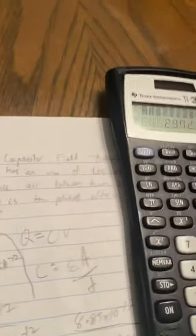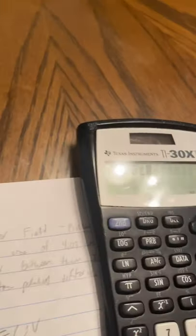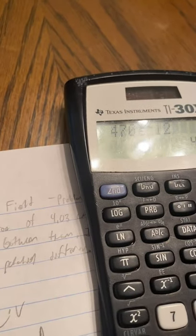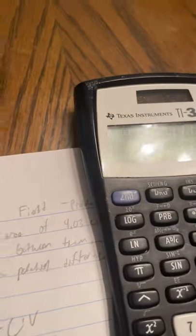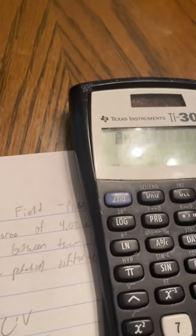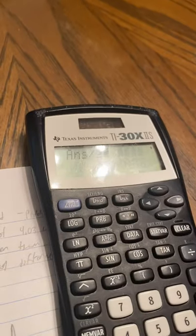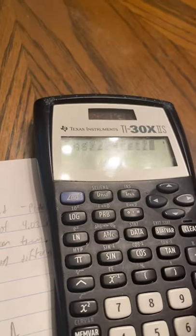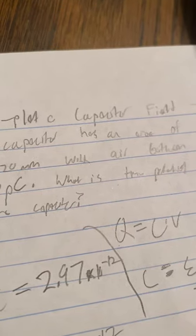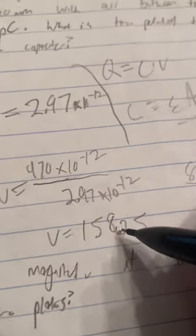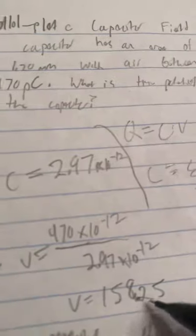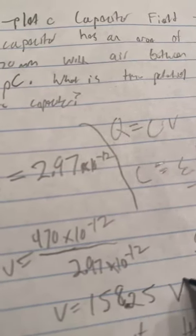All right, and that's going to equal these. And then let's put that in the calculator: 470 e to the negative 12, you can just divide it, divide it by 2.97 e. And that gives you the voltage is 158.25 volts.